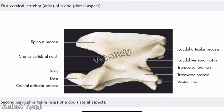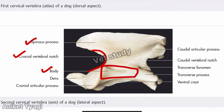This is the second cervical vertebra, or axis, of the dog — lateral aspect. You can see the spinous process, cranial vertebral notch, body, cranial articular process, dens, caudal articular process, caudal vertebral notch, transverse foramen, transverse process, and ventral crest.